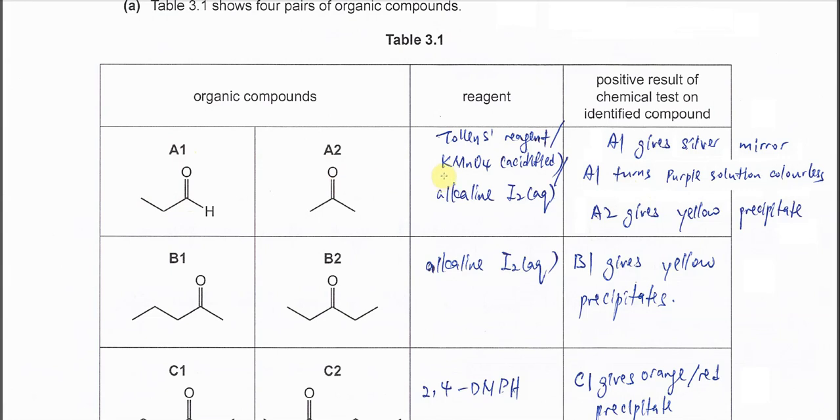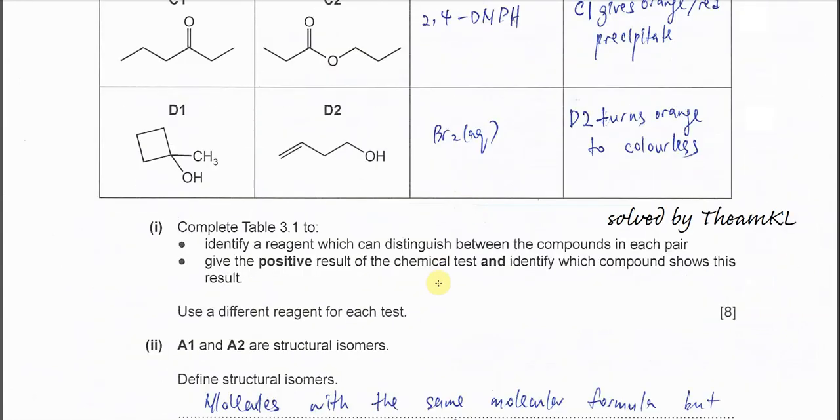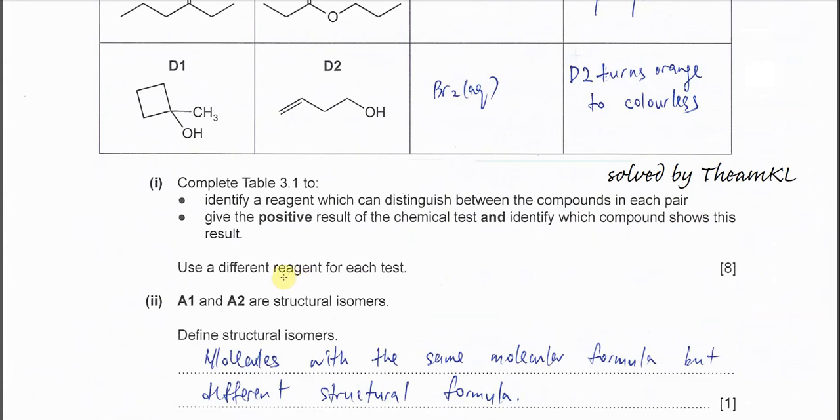Or you can use alkaline iodine because here is the methyl ketone, so it will form yellow precipitate. But for this part, the alkaline iodine might not really be the good answer because it says that you can use different reagent for each test.